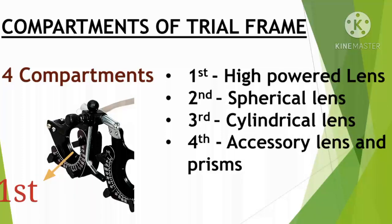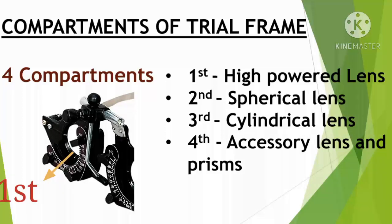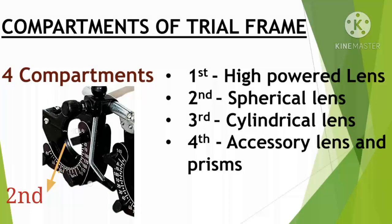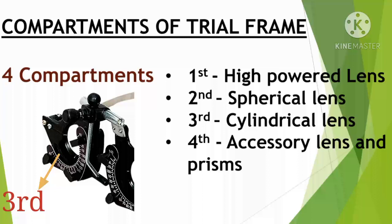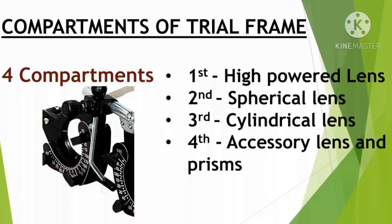In the first compartment, we place high-powered lenses. The second compartment is to place spherical lenses. In the third compartment, we place cylindrical lenses — because we mark the axis, we can place cylindrical lenses easily on the required axis. In the fourth compartment, we place accessory lenses and prisms.